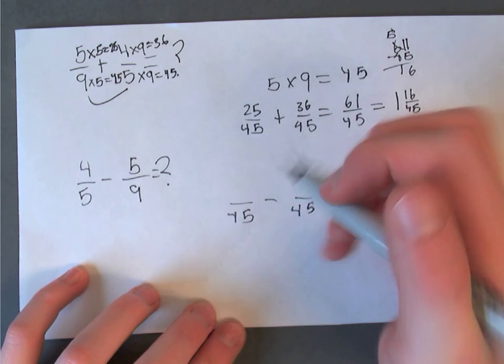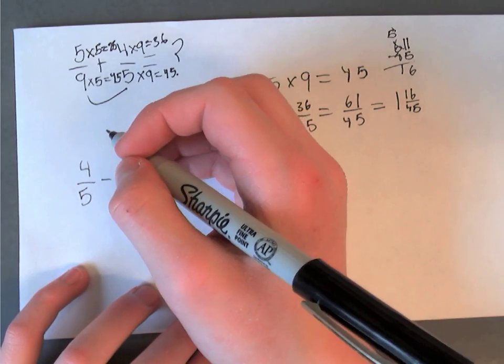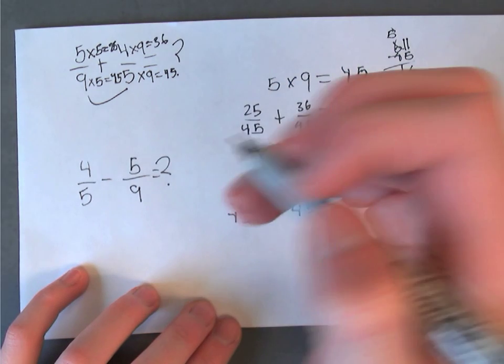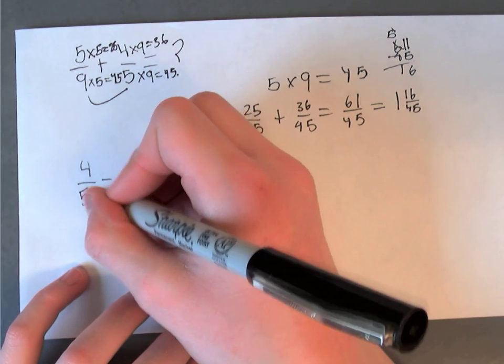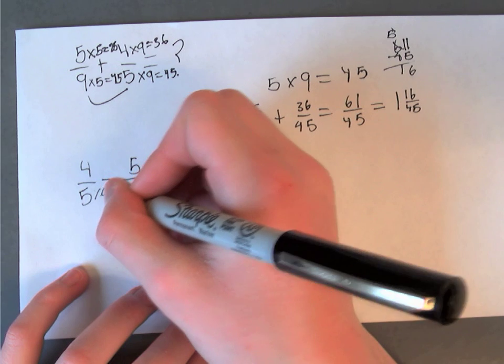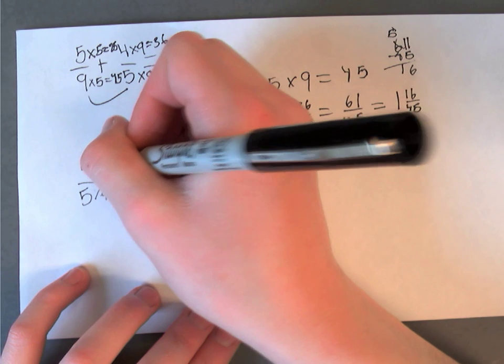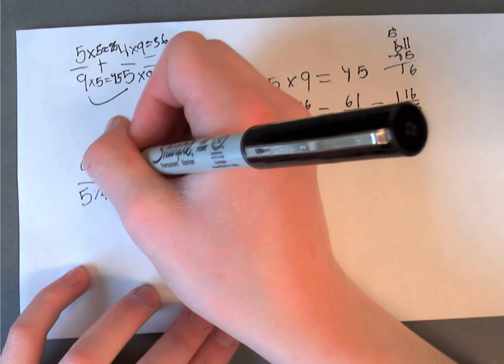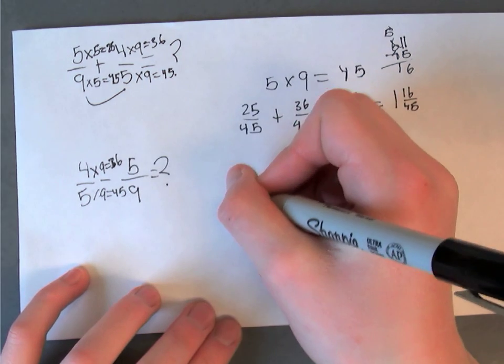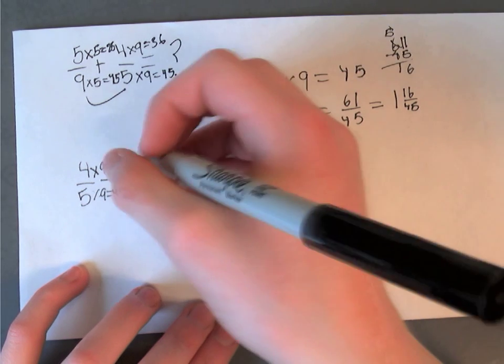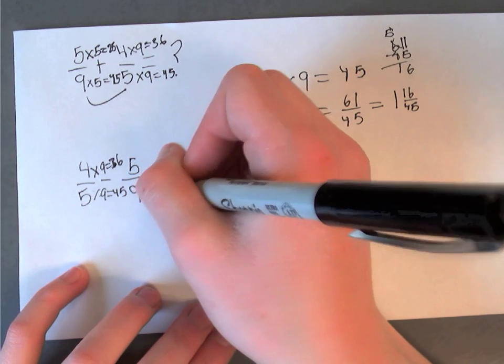So remember whatever we do to the bottom we do to the top. So that's times 9 equals 45 times 9 equals 36. And times 5 equals 45, so that's 25 over 45.